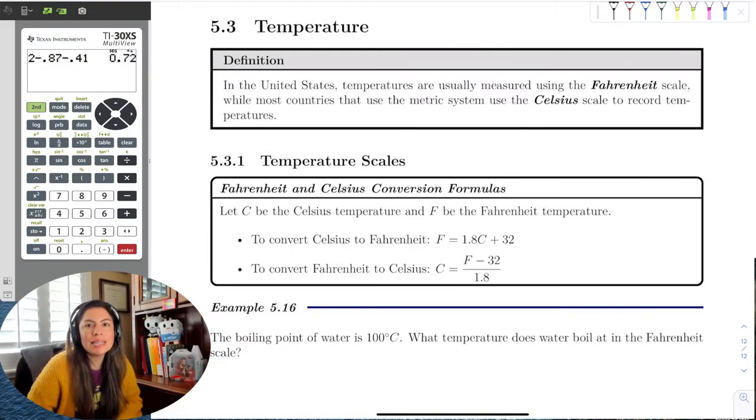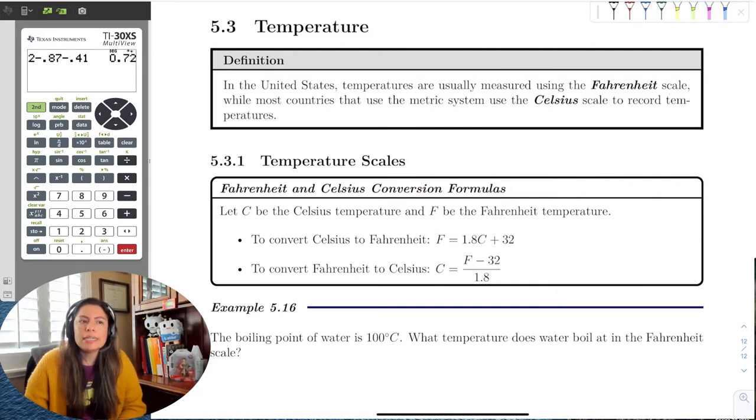Hi, so in this last section in Chapter 5 is temperature. It seems kind of silly to talk about temperature, but there are different types of temperature in the world. The USA uses Fahrenheit for their temperatures. Much like the customary system where we use inches, feet, pounds, and ounces, we use different for temperature as well.